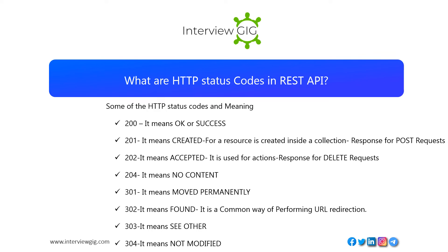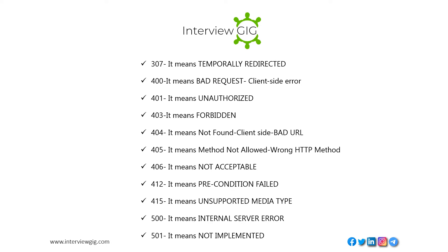Some HTTP status codes and their meanings: 200 means OK or success. 201 means Created — a resource is created inside a collection, used for POST requests. 202 means Accepted — used for actions response for DELETE requests. 204 means No Content. 301 means Moved Permanently. 302 means Found — a common way of performing URL redirection. 303 means See Other. 304 means Not Modified. 307 means Temporarily Redirected. 400 means Bad Request (client-side error). 401 means Unauthorized. 403 means Forbidden.